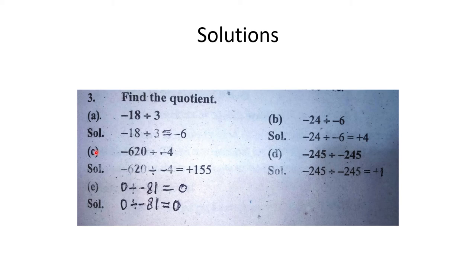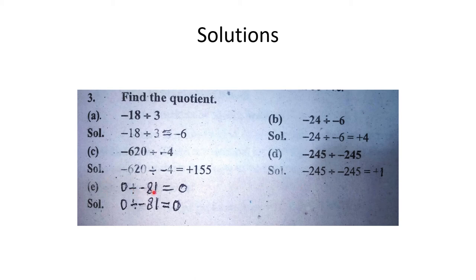C part: minus 620 divided by minus 4 — minus minus plus, 620 ÷ 4 = 155, answer 155. D part: minus 245 divided by minus 245 — minus minus plus, 245 cuts 245, answer plus 1. E part: 0 divided by minus 81 = 0, kyunki 0 ko kisi bhi cheez se divide karein answer 0 hota hai.